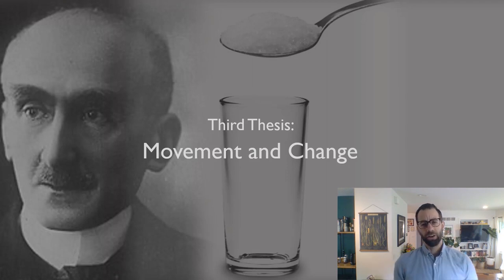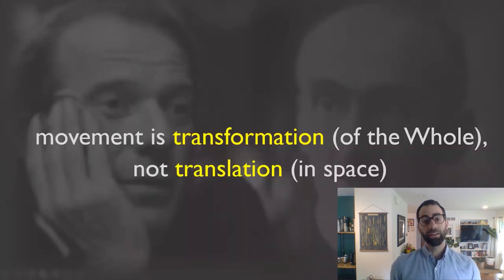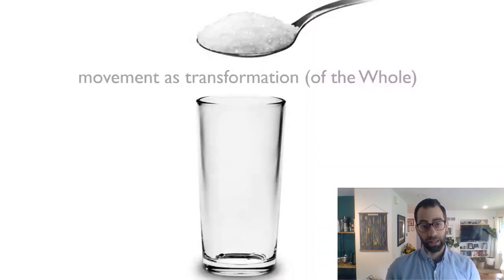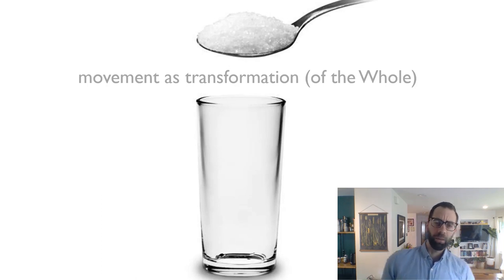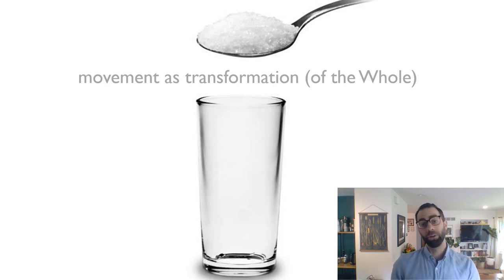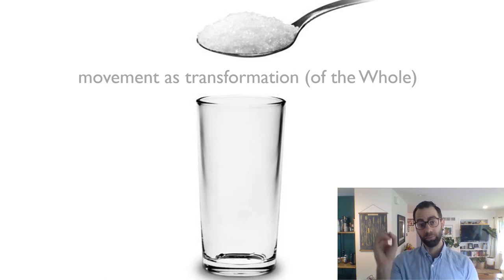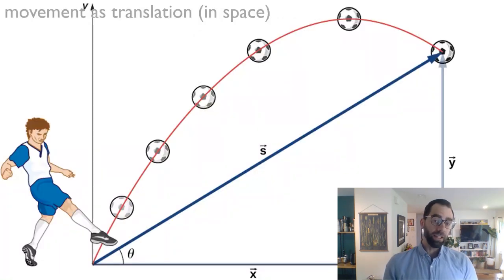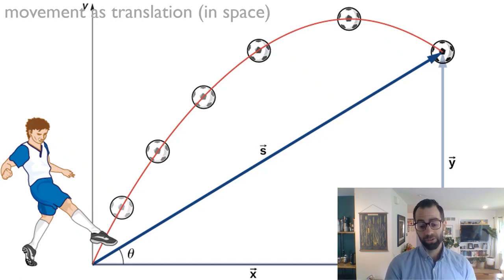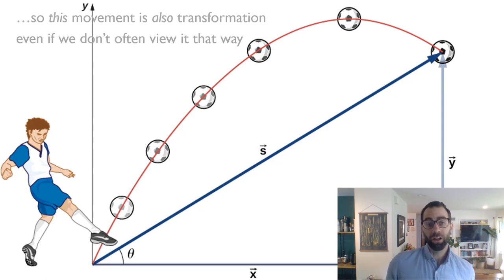Let's review Bergson's third thesis on movement and change. Remember this idea that movement is transformation of the whole, not translation in space. This was summarized by Bergson's example of sugar dissolving in water — an example of something moving that is more obviously understood as a transformation rather than something simply moving in space. The water transforms into sugar water. The idea is that we should look at all movement this way.